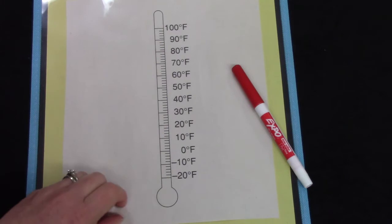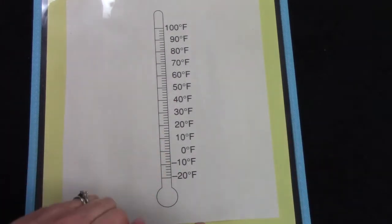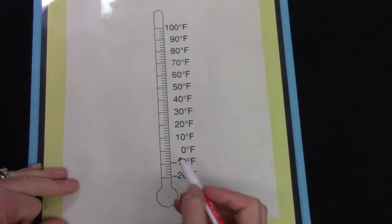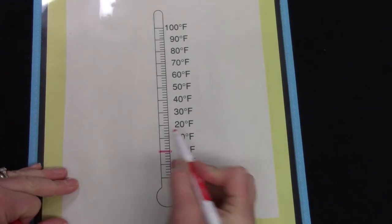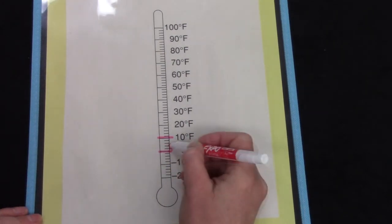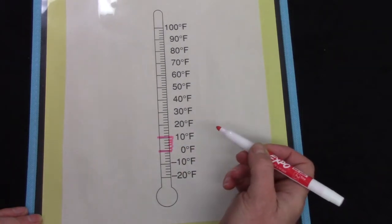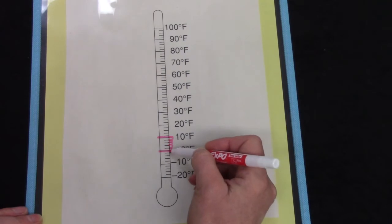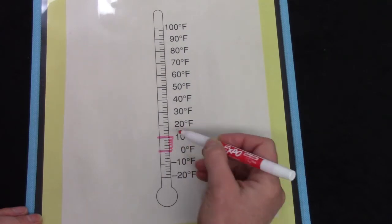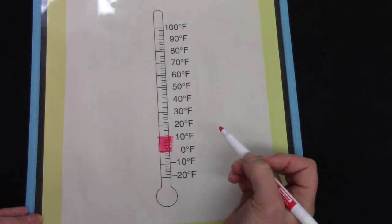Many thermometers have a scale of 2. I'd like for you to notice that between 0 and 10 there are some little marks. 1, 2, 3, 4, 5. There are 5 little jumps, and they're each worth 2 degrees. 2, 4, 6, 8, 10. Between 0 and 10 there are 5 jumps worth 2 degrees each.